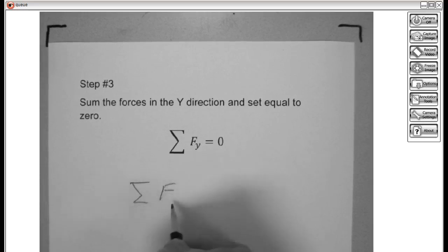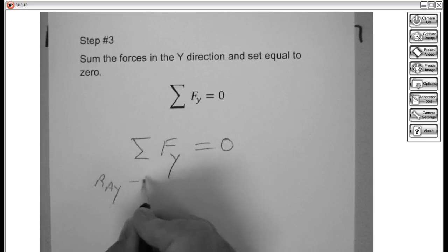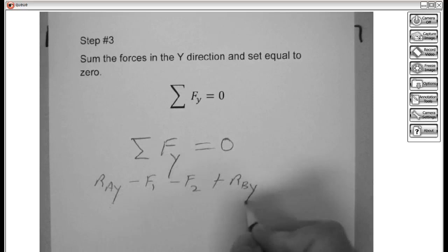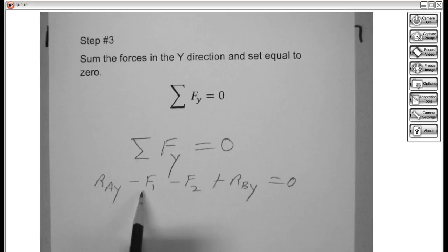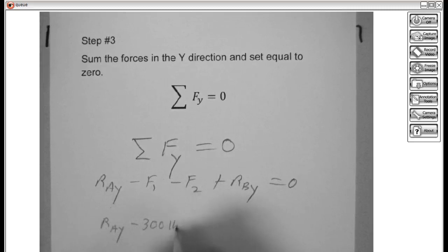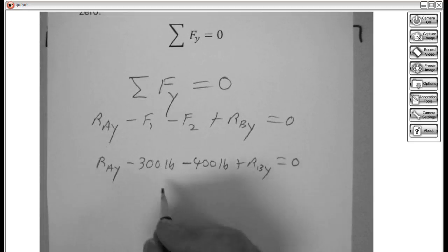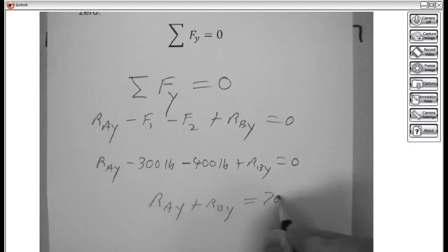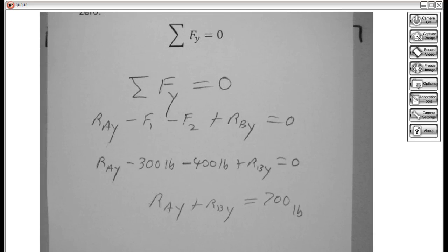Sum of the forces in the y equals 0. We've got RAY minus F1 minus F2 plus RBY equals 0. This was going up so it's positive. This was going up so it's positive. This was coming down negative. This was coming down negative. Let's plug in some numbers. 300 pounds in the downward direction, 400 pounds in the downward direction. Just simplifying the equation a little bit, we come up with RAY plus RBY equals 700 pounds. That's as far as we can get on step 3.